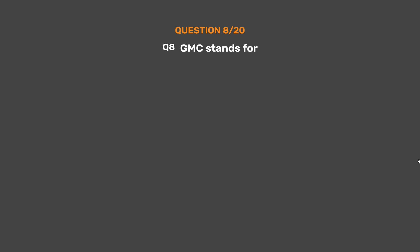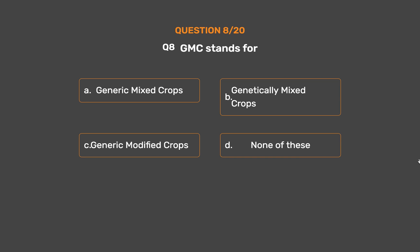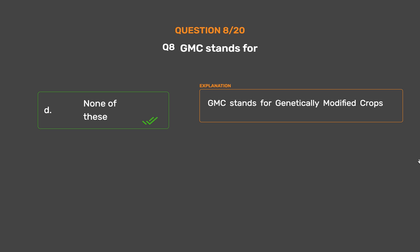Question No. 8. GMC stands for — Option A: Generic mixed crops. Option B: Genetically mixed crops. Option C: Generic modified crops. Option D: None of these. GMC stands for Genetically Modified Crops.